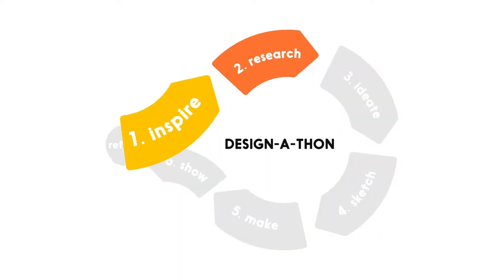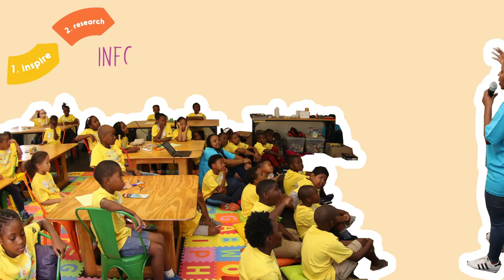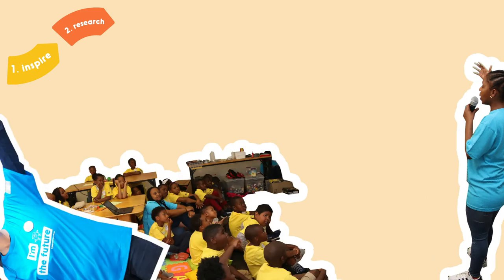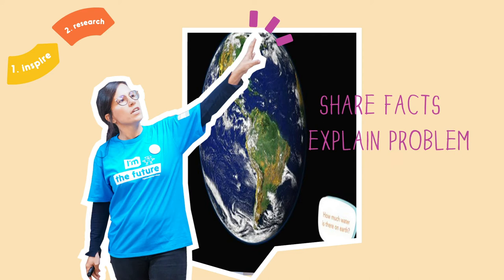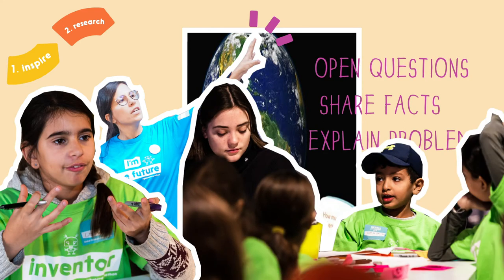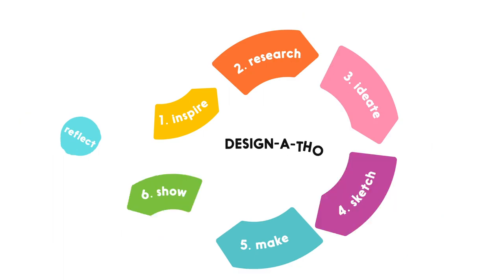Step 1 and 2: Inspire and Research. This step sets the stage to inform and inspire the children about the SDG theme and its specific problems. Your role is to start the conversation by sharing facts, explain the problems, and engage the children by asking open questions to trigger an inquisitive mindset. Here you work with the theme presentation.